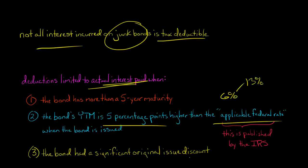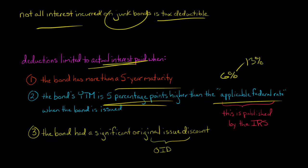Okay, it's more than five percentage points higher than that. So it was more than five-year maturity, more than five percentage points higher than the federal rate, and the bond had a significant original issue discount, OID.